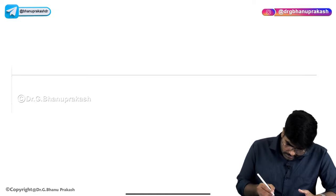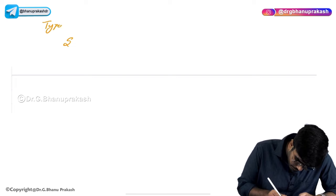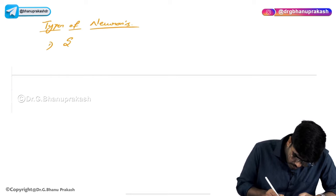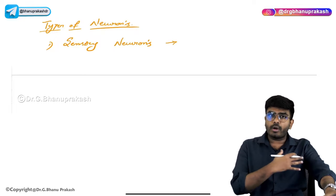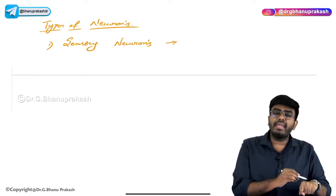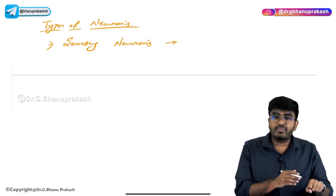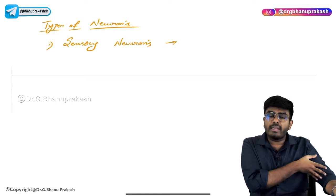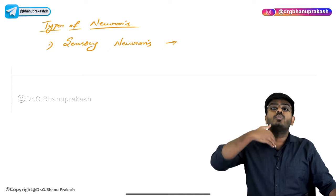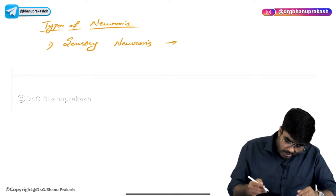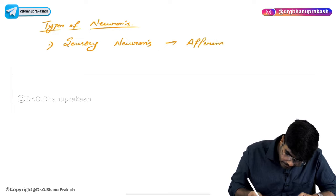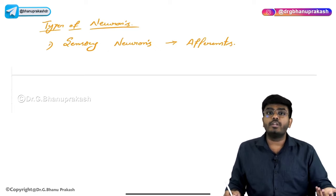Now let's talk about neurons and how many types of neurons there are. First type of neurons are called sensory neurons. Sensory neurons take information from the body to the brain — for example, touch, pain, temperature, pressure, proprioception. All this information from the body is carried by a sensory neuron to the brain. Sensory neurons are also called afferents.